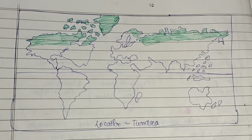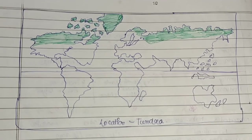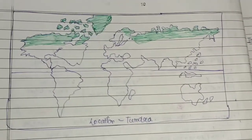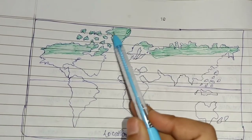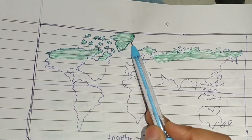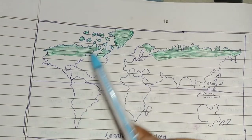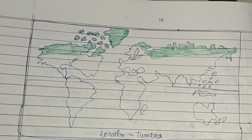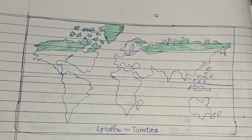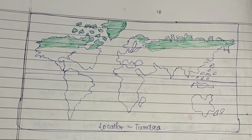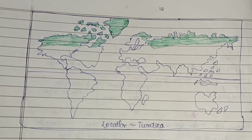On a world map, the areas where the tundra biome is present can be identified in the northern polar regions. This concludes the topic of the tundra biome. If you liked this video, please subscribe to the channel.